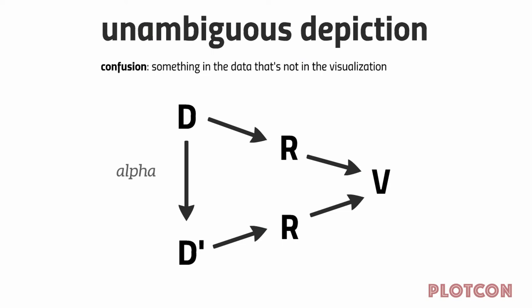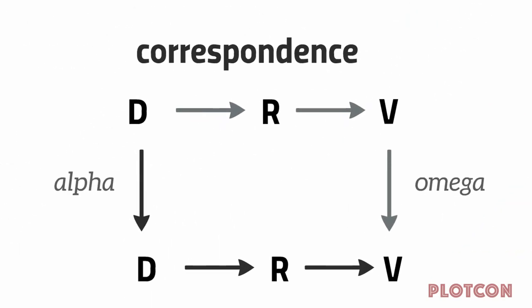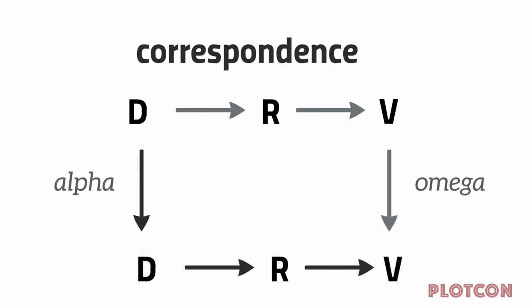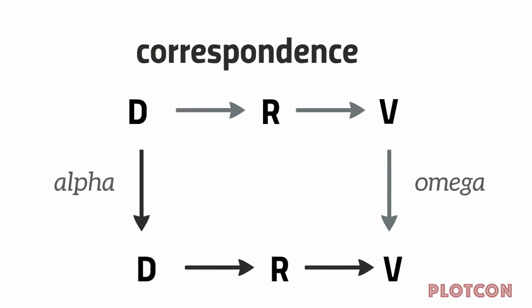This is a commutative diagram. The alpha on the far left are questions that users want to ask from the visualization — who is the fastest man in the world, what would happen if somebody ran a 100-meter dash one second faster than Usain Bolt. The alpha are the questions your users want to ask. The omega are the changes that those questions should induce in the dataset.